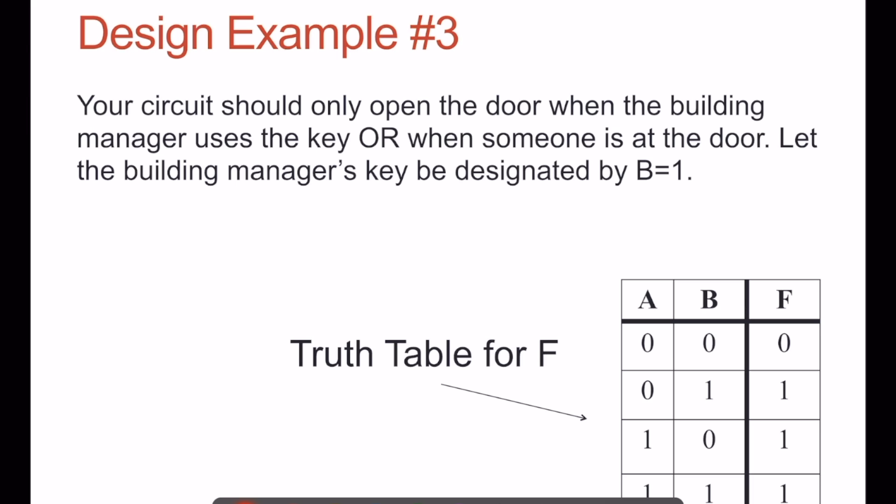We still have the detection for objects in front of the door. If there's an object in front of the door, that's where it's 1, then the output's going to be 1. We're still going to open the door. But also, if the manager activates the key, presses the button, then the door is also going to open. So if B is a 1, we open the door.